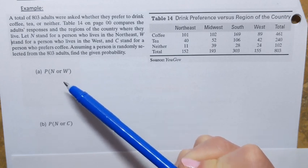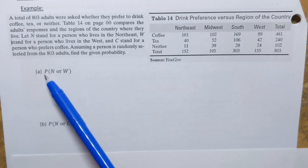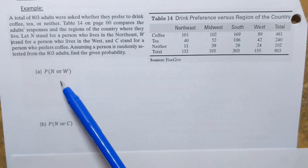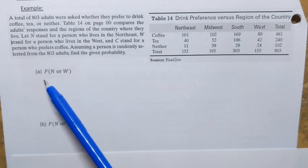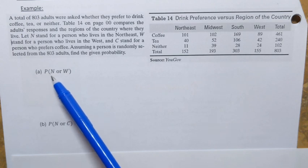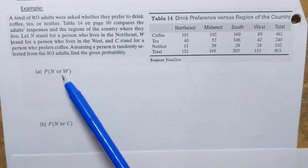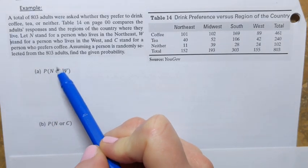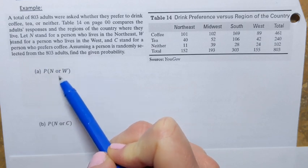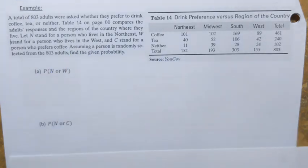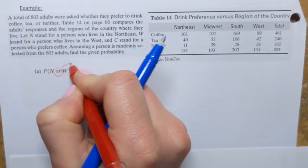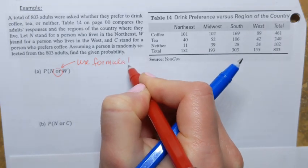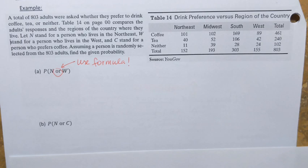Let's try to find the following probability: P of N or W. That means if we randomly select a person from 803 adults, what's the probability that person is from either the northeast or the west? Every time you see OR within the probability event, you want to use the addition rule formula.